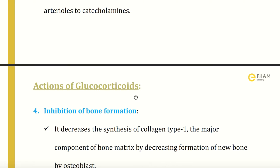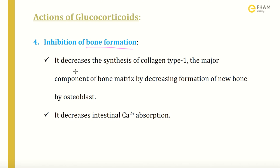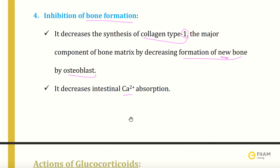The fourth action is inhibition of bone formation. It decreases the synthesis of collagen type 1, which is a major component of bone matrix, by decreasing the formation of new bone by osteoblasts. It also decreases intestinal calcium absorption, and calcium is a very important component of bone material.